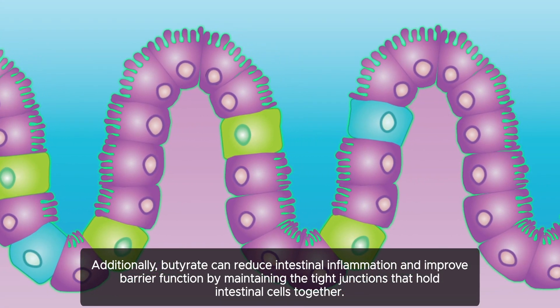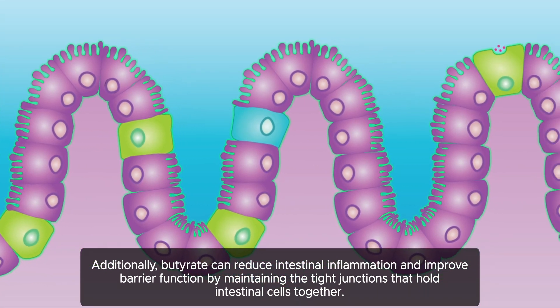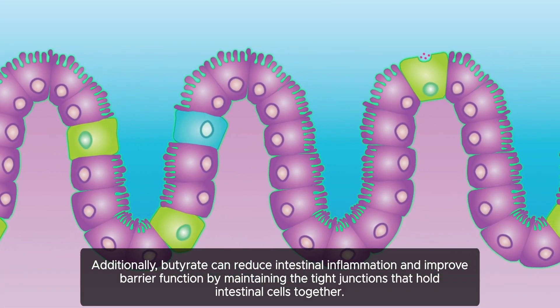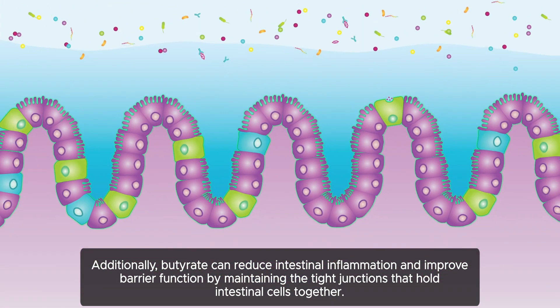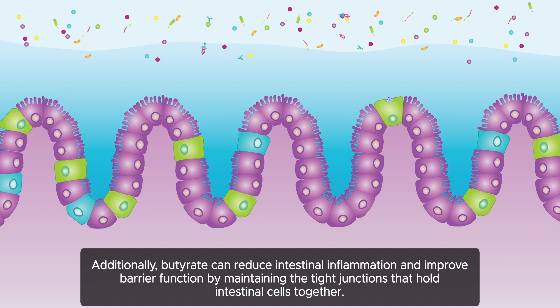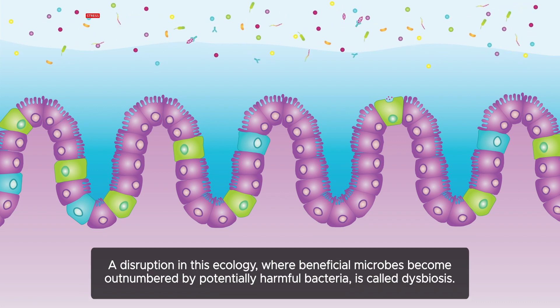Additionally, butyrate can reduce intestinal inflammation and improve barrier function by maintaining the tight junctions that hold intestinal cells together.